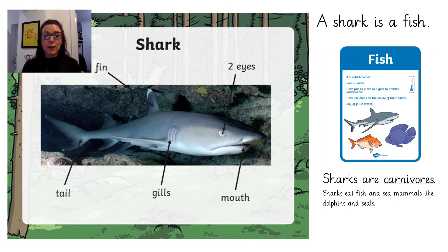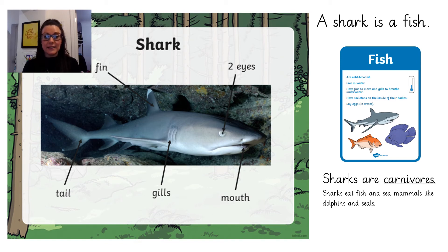Here is a shark. Sharks have two eyes, a mouth, gills that help them to breathe, a fin that helps them to swim and a tail. Sharks are fish. They live in water and they lay eggs in water. The shark's diet consists of fish and other sea mammals like dolphins and sea lions. This makes them carnivores.